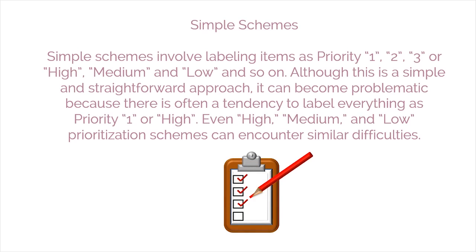Simple schemes involve labeling items as priority 1, 2, 3, or high, medium, and low, and so on. Although this is a simple and straightforward approach, it can become problematic because there is often a tendency to label everything as priority 1 or high. Even high, medium, and low prioritization schemes can encounter similar difficulties.